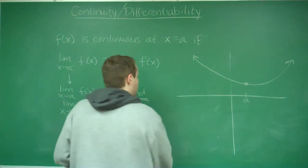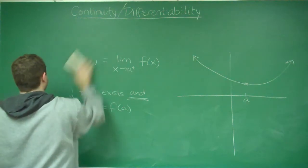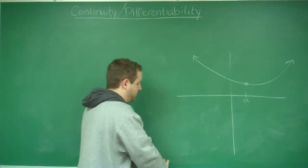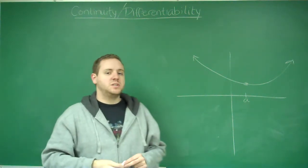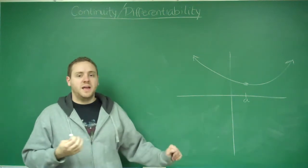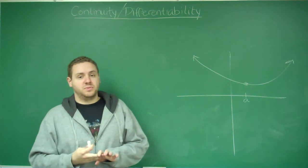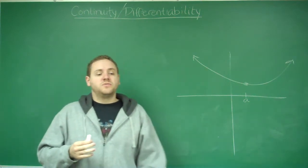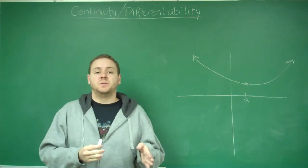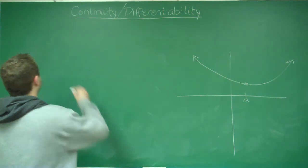So that's continuity. Now let's get into differentiability. If a function is not continuous at some x equals a, it's automatically not differentiable there. So in order for a function to be differentiable, it first needs to be continuous, and then we'll talk about what else needs to happen.